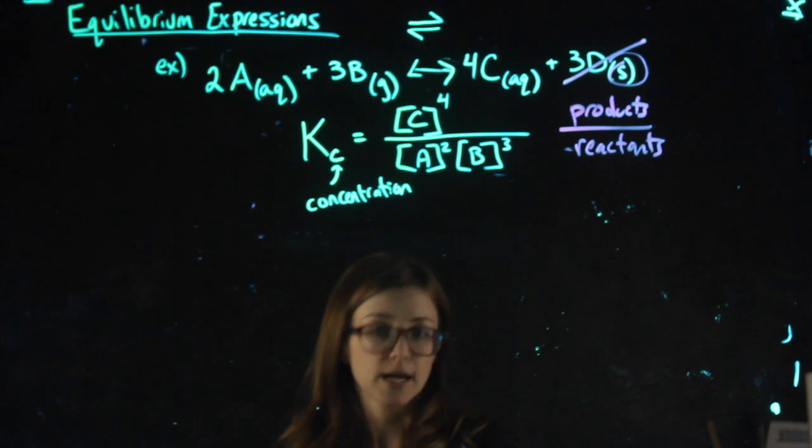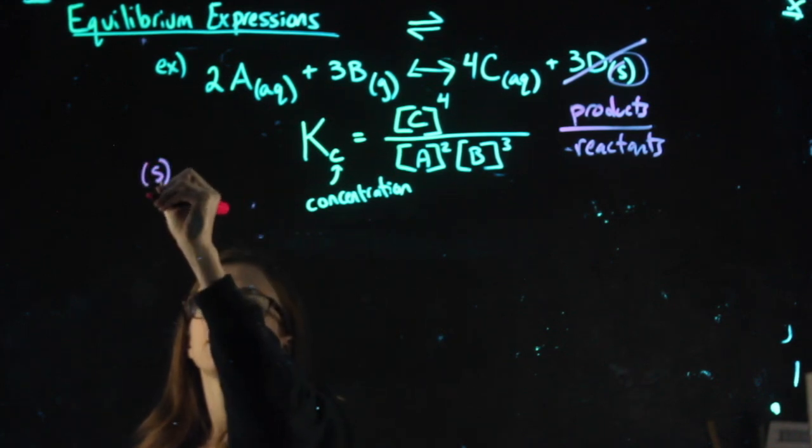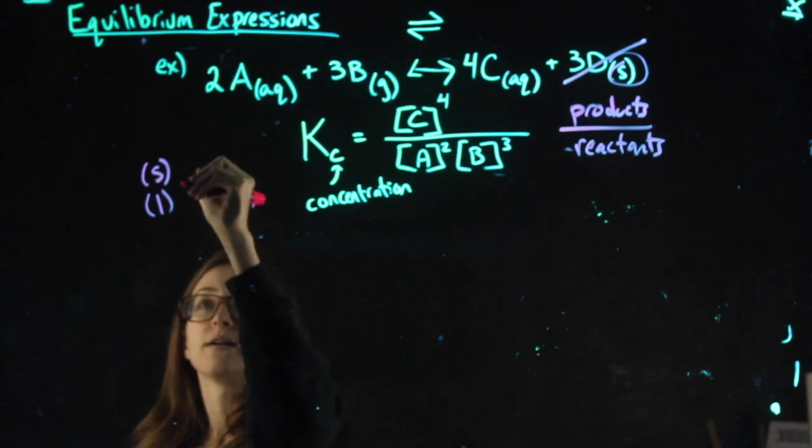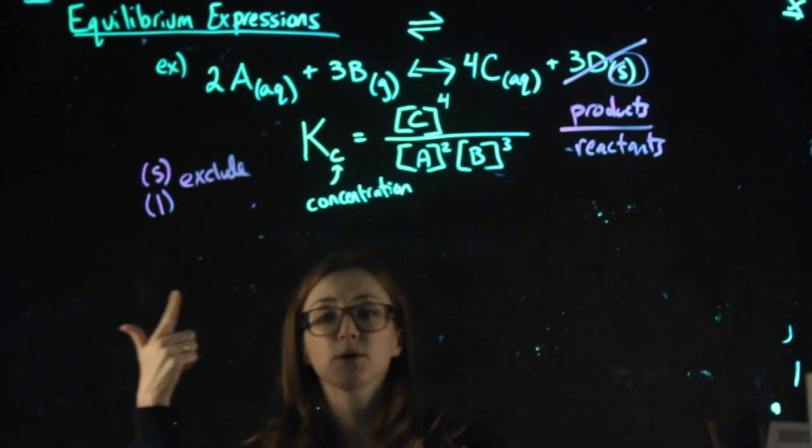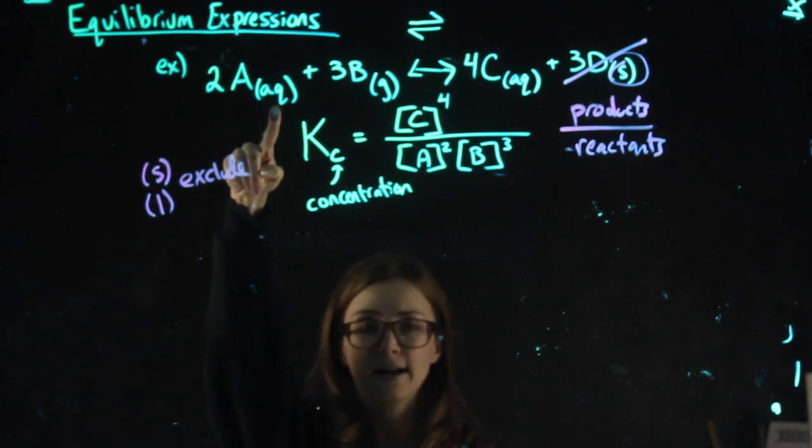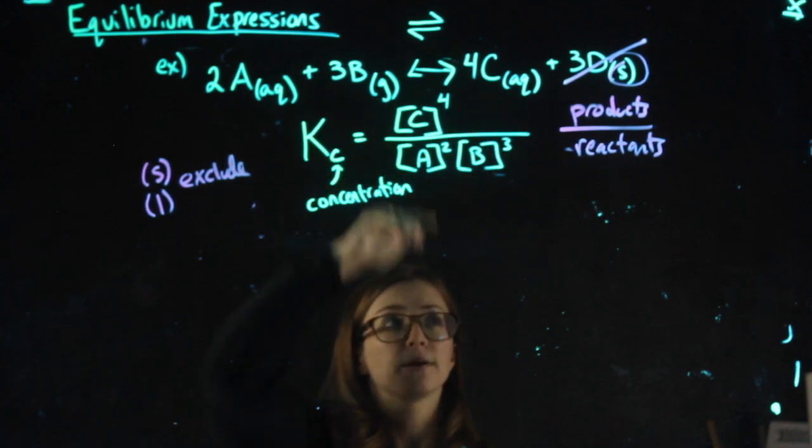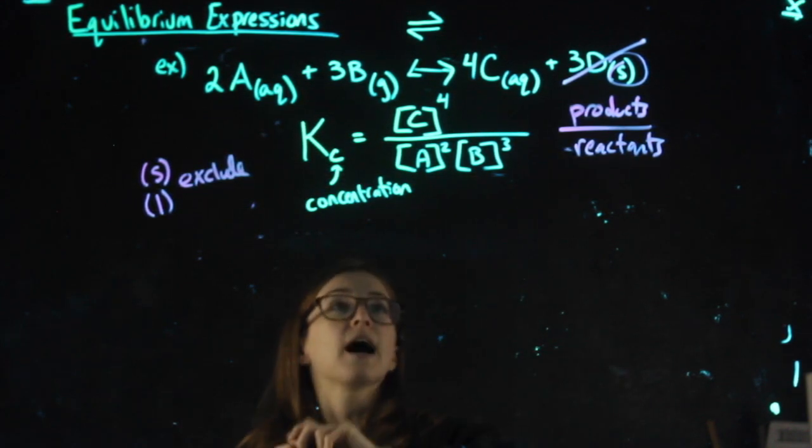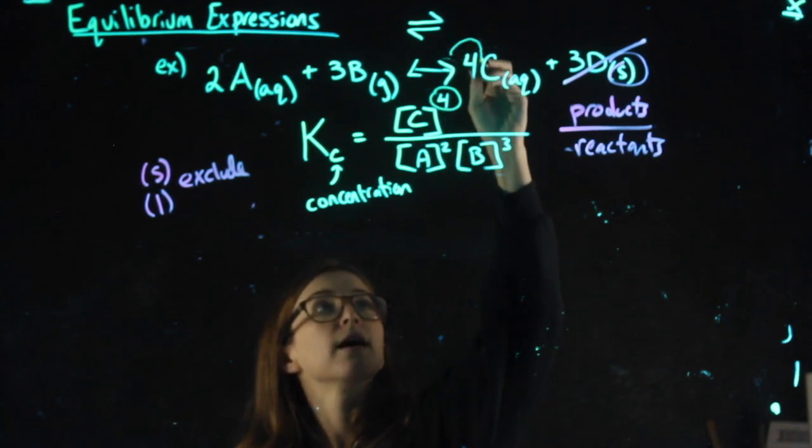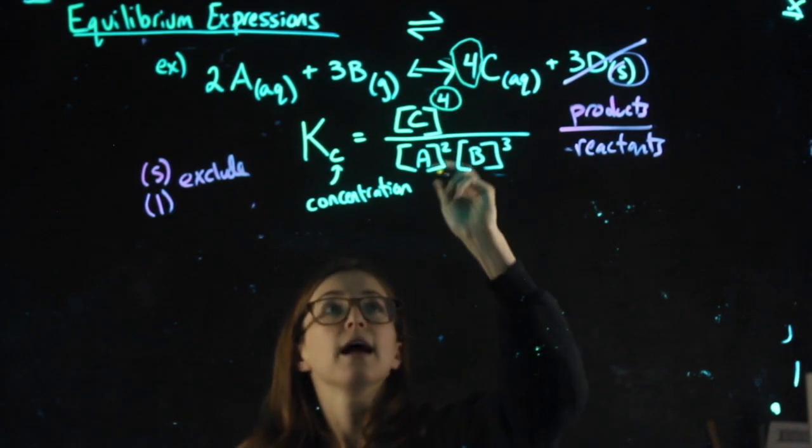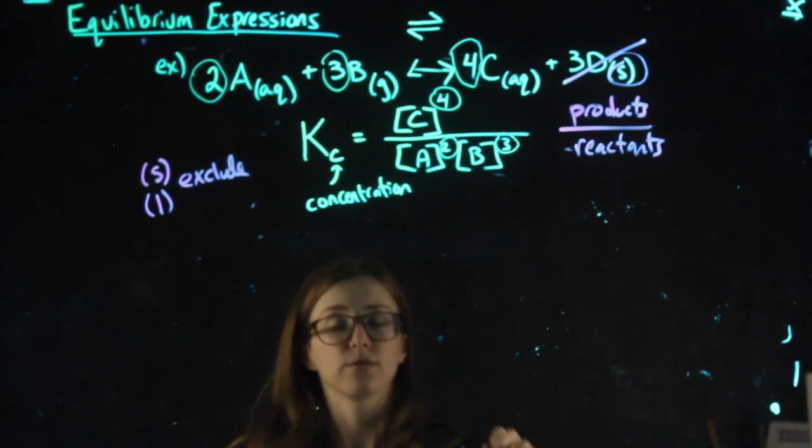We exclude solids and pure liquids. So if anything has an S next to it or an L next to it, you would exclude them. So exclude solids and pure liquids. Aqueous is okay. Gas is okay. So that's why these three were all included. Then you might notice that C was to the fourth power. That's because of its coefficient. A was squared. That's because of its coefficient. B was cubed. That's because of its coefficient.